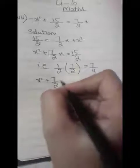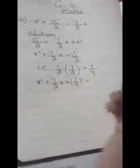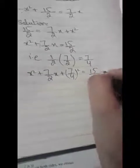We write: x² plus 7/2x plus (7/4)² equals 15/2, and we will add (7/4)² to the right side as well.